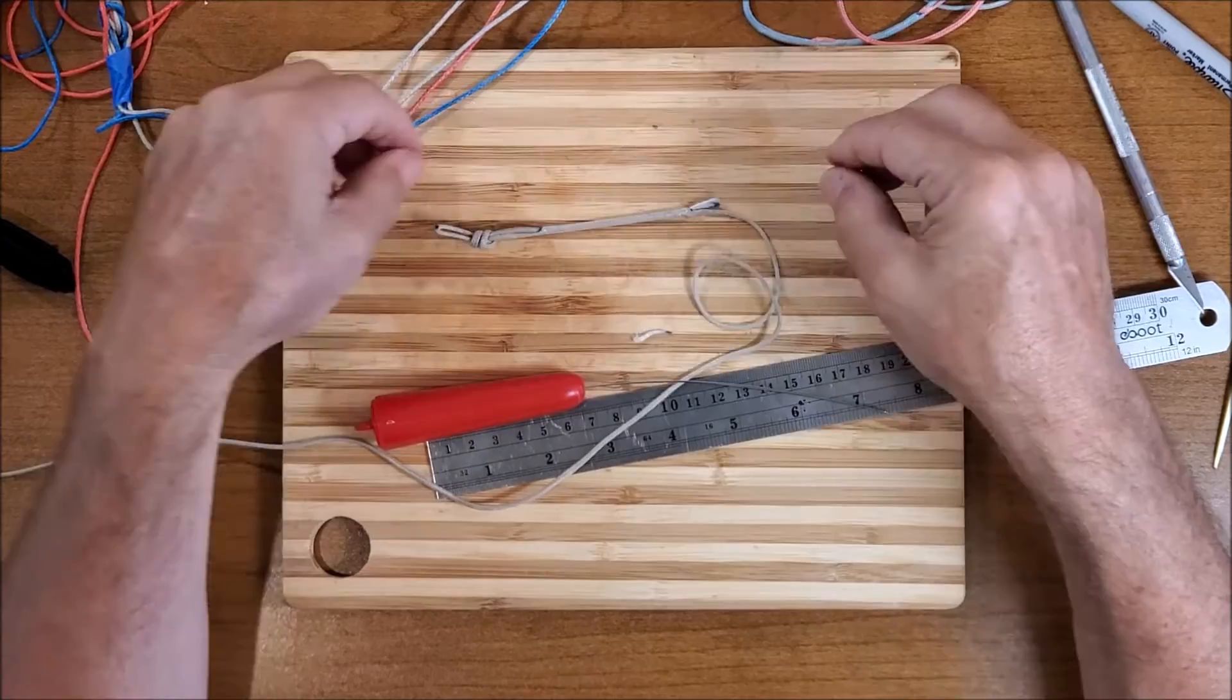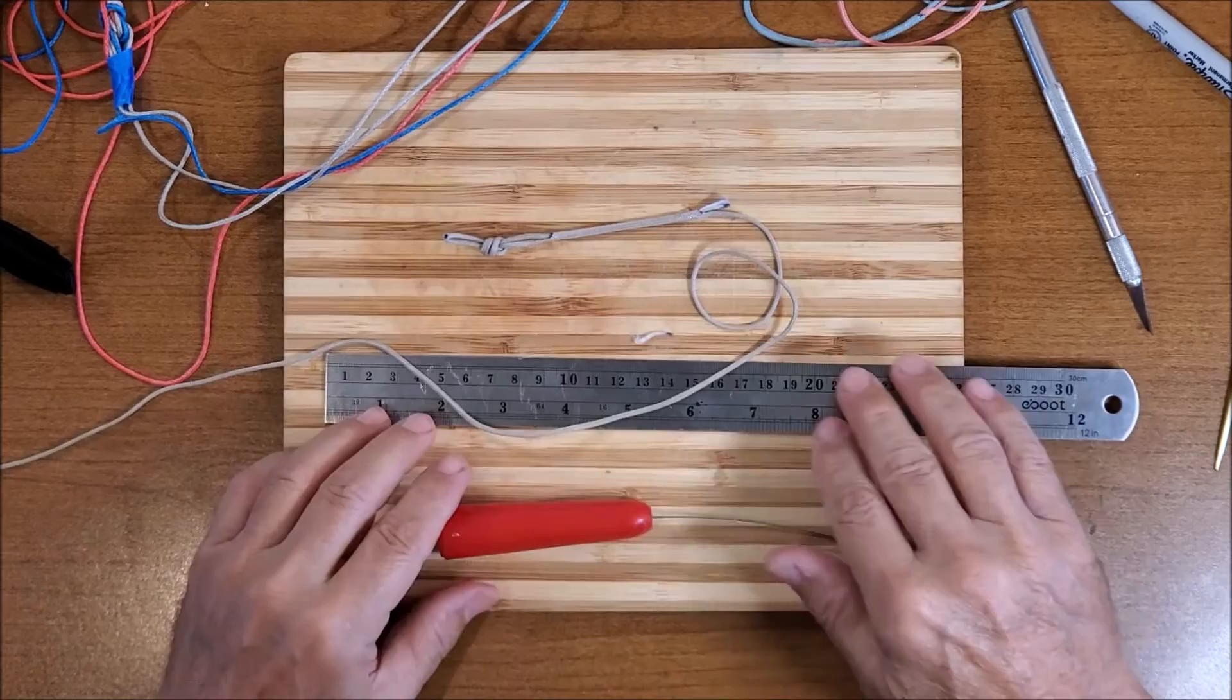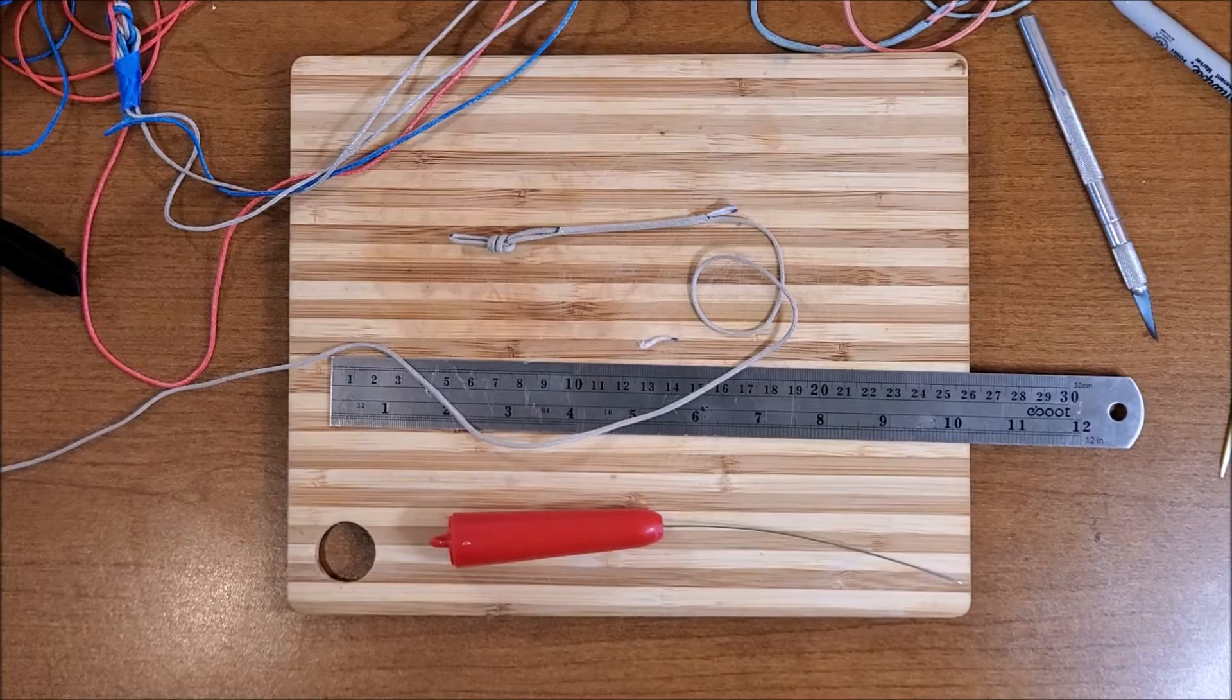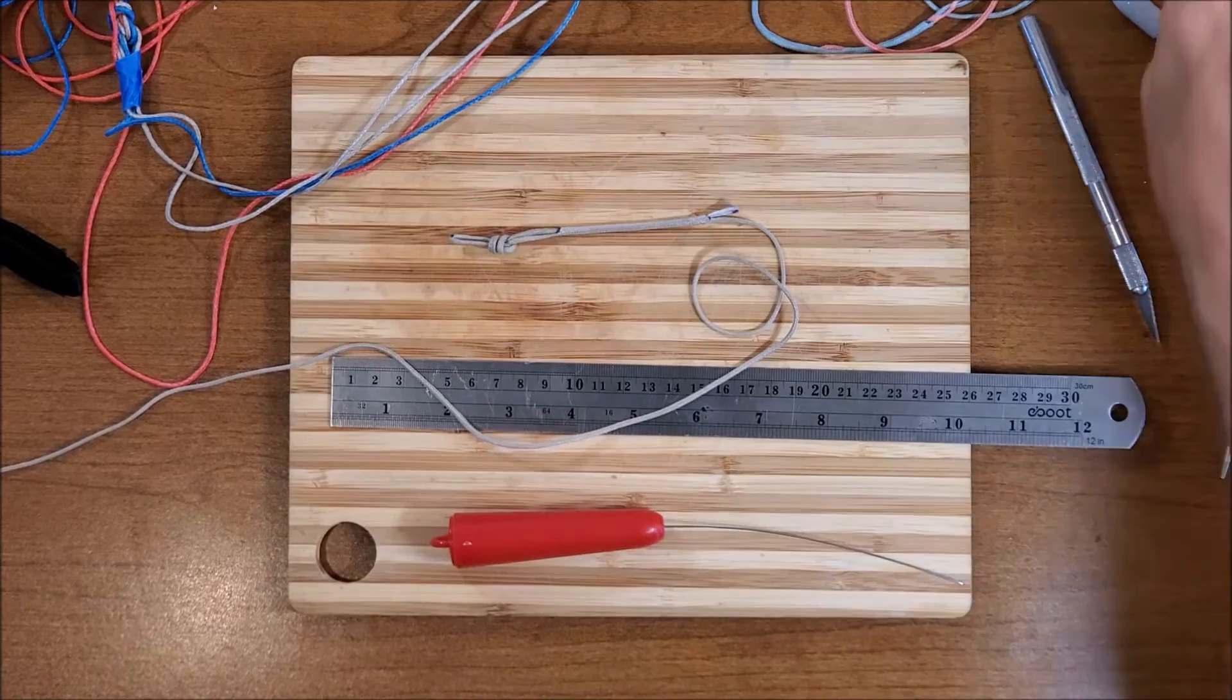So, there you have it. A quick tutorial on how to cut down and splice loops into the end of your kite lines. Hopefully this is helpful. Any more questions, leave them in the comments and we can always do another video. Take care and aloha.